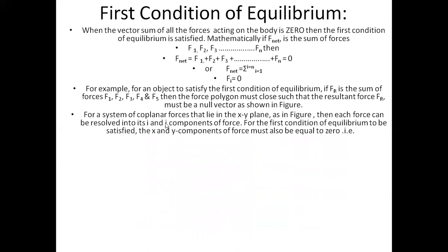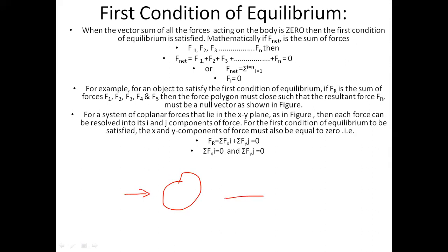For a system of co-planar forces lying in an XY plane, each force can be resolved into X-axis and Y-axis components. For the first condition of equilibrium to be satisfied, the sum of all X components and the sum of all Y components must both equal zero. That means all horizontal forces must cancel out and all vertical forces must cancel out.